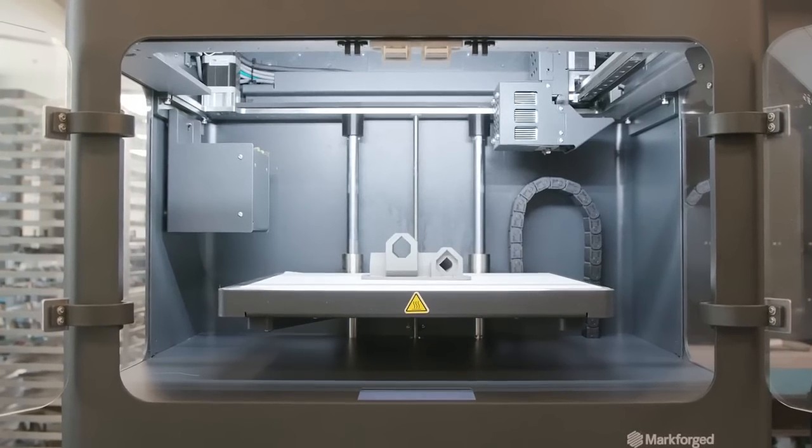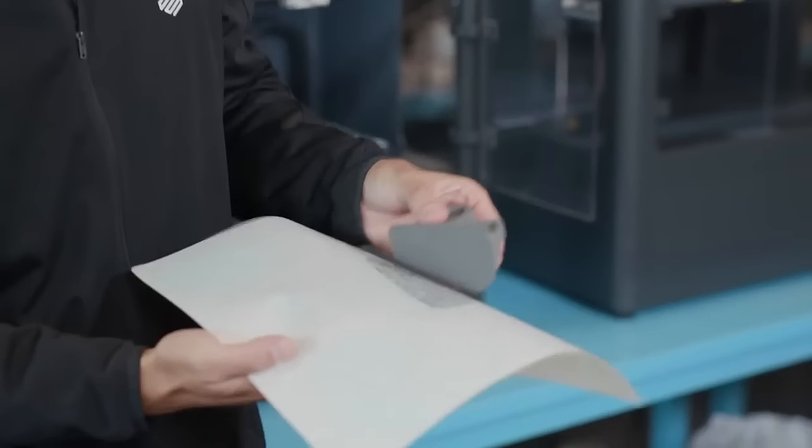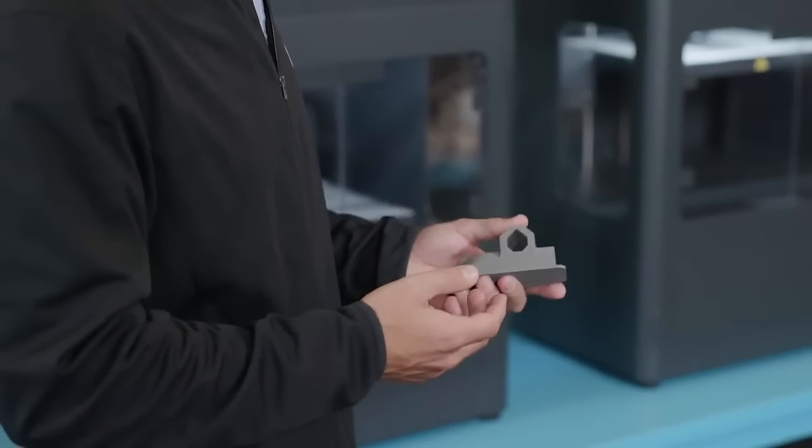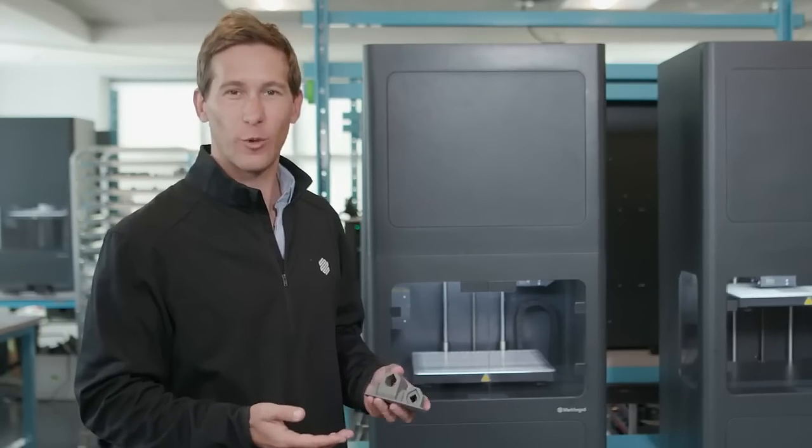Once your part is finished printing, you'll get a notification. At this point, you can go to the printer, remove the part from the build tray, and clear the bed. Now we have what's called a green part. It doesn't really look or feel like metal. However, a large part of it is comprised of metal powder. Next step, we'll be putting it into wash one for the debind process.